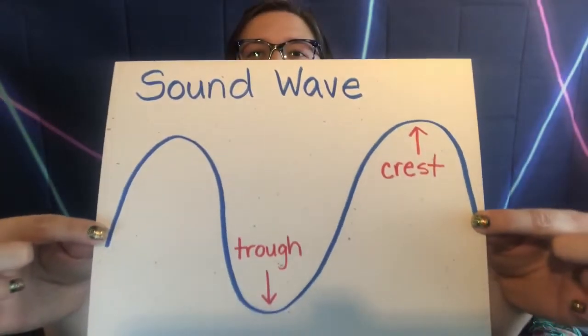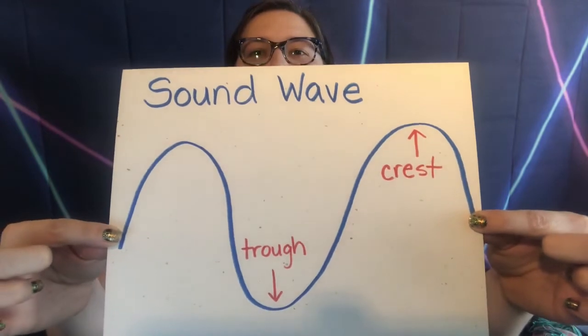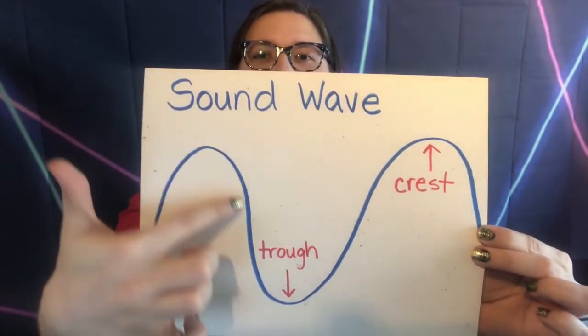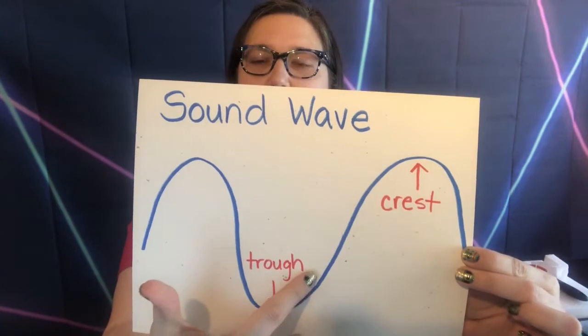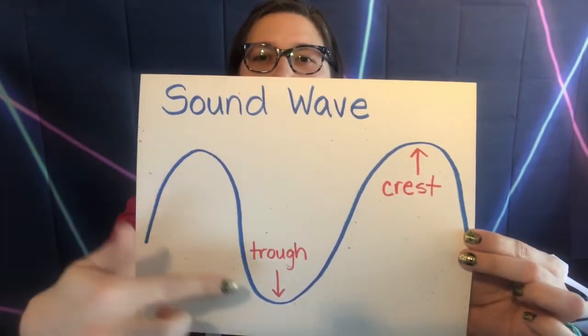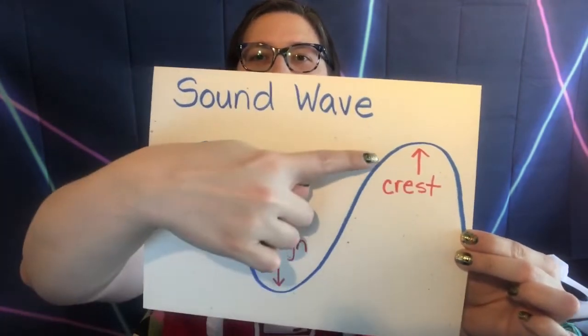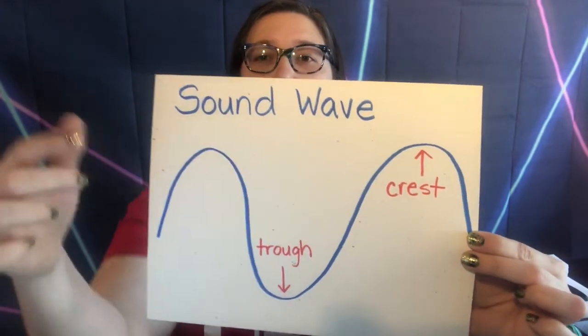When all of these air molecules are moving and bumping into each other and the sound is traveling, we call that a sound wave. Sound travels in waves. A sound wave looks something like this. You'll notice that you have high points and low points in the sound. Each sound wave has low points called troughs and high points called crests.